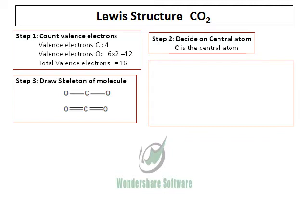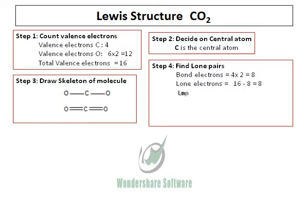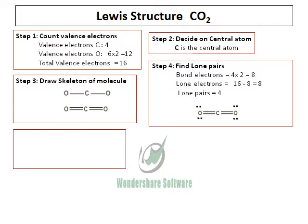Now we need to know how many electrons are left behind, so let's calculate the lone pairs. With 4 bonds, 8 electrons are gone. From the total valence electron, 16 minus 8, we get lone pairs of 4, which are on the oxygen, to complete the octet of oxygen. So the structure shows oxygen has two lone pairs on it, with carbon having no lone pairs.